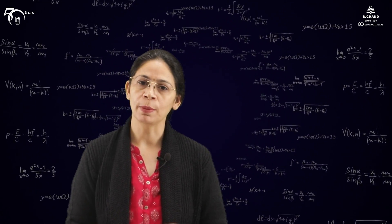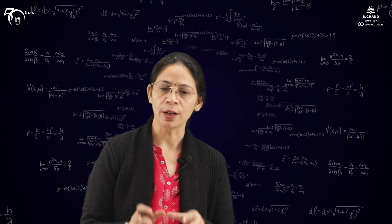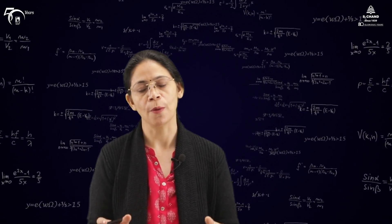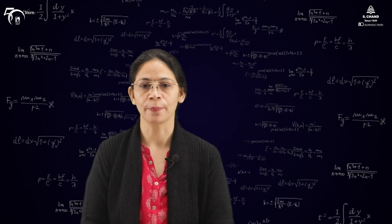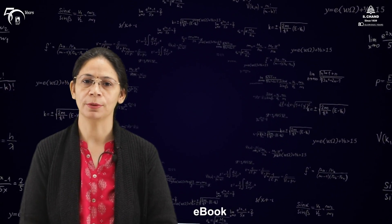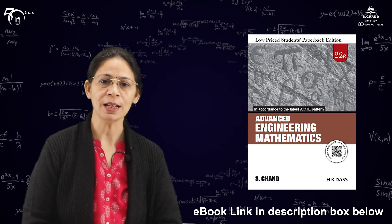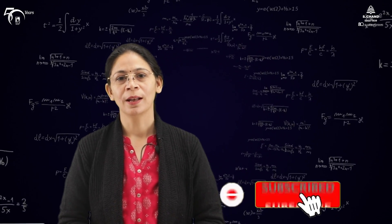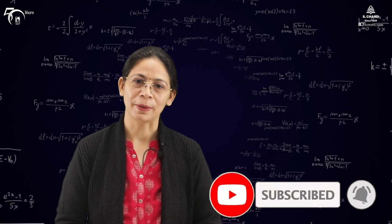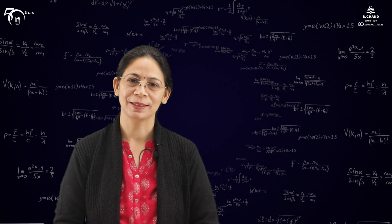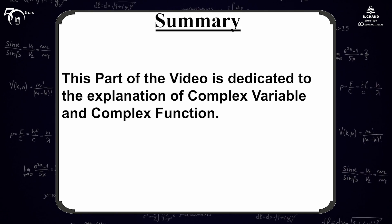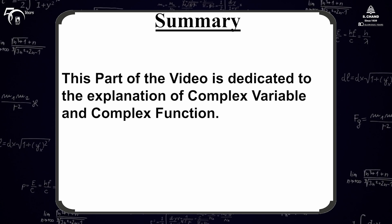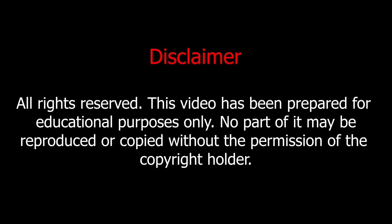Complex variable z = x + iy is formed by x and y which are real in nature, but together they form the complex variable. For more details, please refer to the book from Ishaan Publishing. Details are given on this side and the link is given in the description box. Please do like, share and subscribe the video. Press the bell icon to get notification of upcoming videos. Thank you very much.